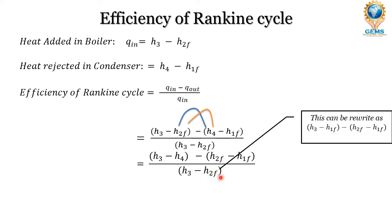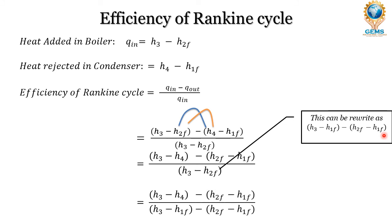The denominator H3 minus H2F can be rewritten as H3 minus H1F minus (H2F minus H1F). So the final representation is: H3 minus H4 minus (H2F minus H1F), all divided by H3 minus H1F minus (H2F minus H1F).